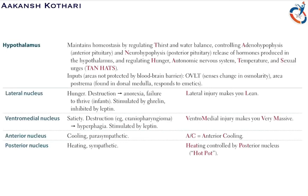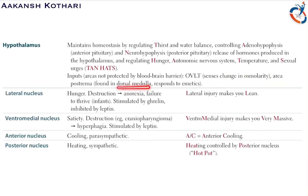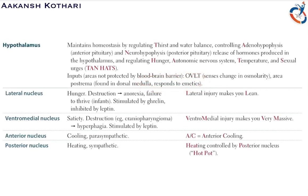There is also the OVLT, which senses changes in osmolarity, and the area postrema, which is found in the dorsal medulla and responds to emetics — meaning it is a vomiting center. These two areas, the OVLT and the area postrema, are not protected by the blood-brain barrier.